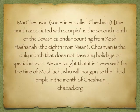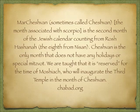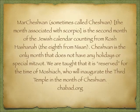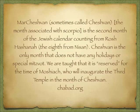This is the sign for the month of Cheshvan or Marcheshvan. From Chabad: this month, associated with Scorpio, is the second month of the Jewish calendar counting from Rosh Hashanah — the eighth month from Nisan in spring when we count the calendar. Cheshvan is the only month that does not have any holidays or special mitzvot. We are taught it is reserved for the time of Messiah, who will inaugurate the third temple in the month of Cheshvan. So even though we have this toxic figure of Scorpio, in the sky there is a man stepping on his head — inferred in the prophecy of Dan, where we are waiting for salvation.